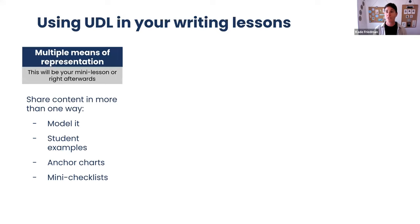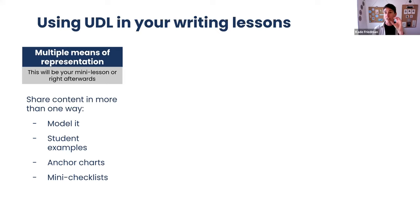So UDL in writing has three principles. The first is multiple means of representation — I often think about this as your mini lesson. It's sharing content in more than one way. So if you're teaching a writing lesson, you want to model it, show student examples, have anchor charts, and have mini checklists that mirror your anchor charts — mini checklists that kids can bring back to their desk where they see all the things they just learned and can sort of track it.